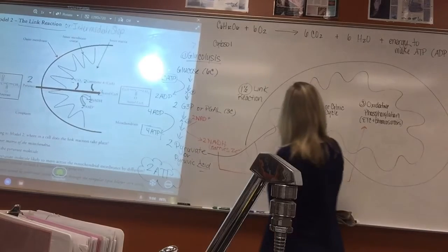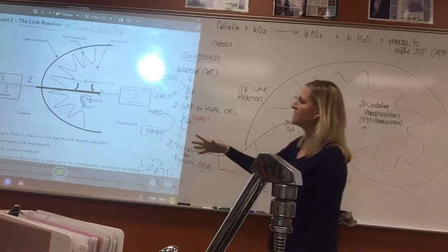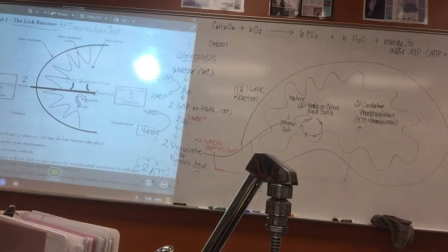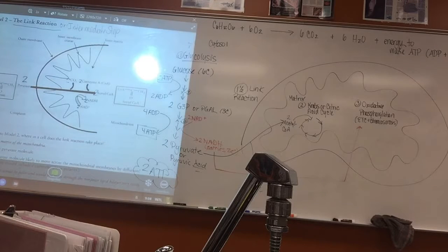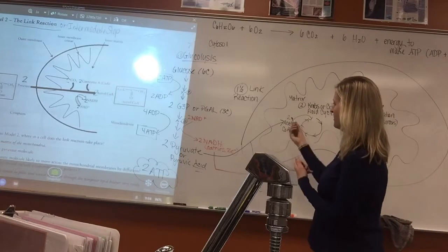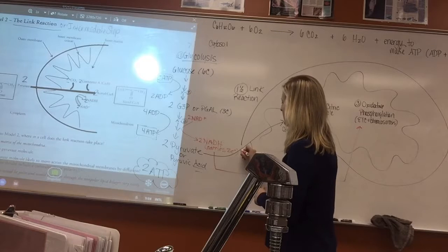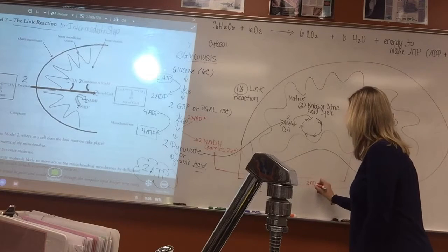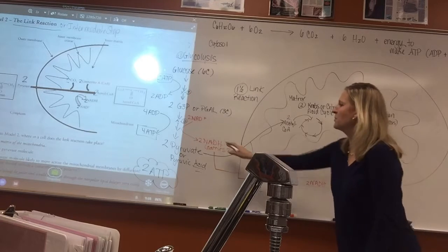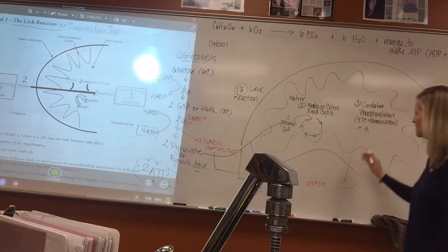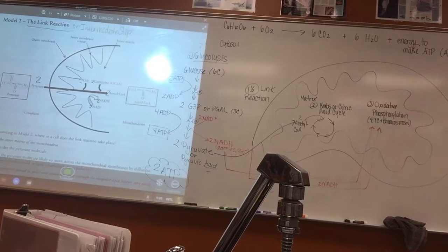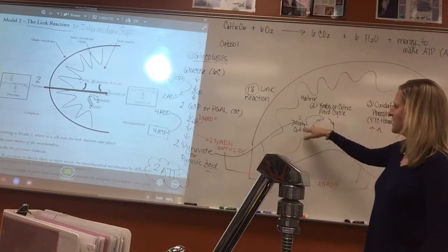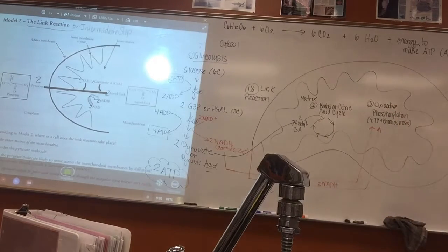Besides the two acetyl-CoAs that enter the Krebs cycle, another important product is electron carriers - a few more NADHs are made. So we now have two NADHs from glycolysis and two NADHs from the intermediate step, each carrying two electrons going to the electron transport chain to make ATP.